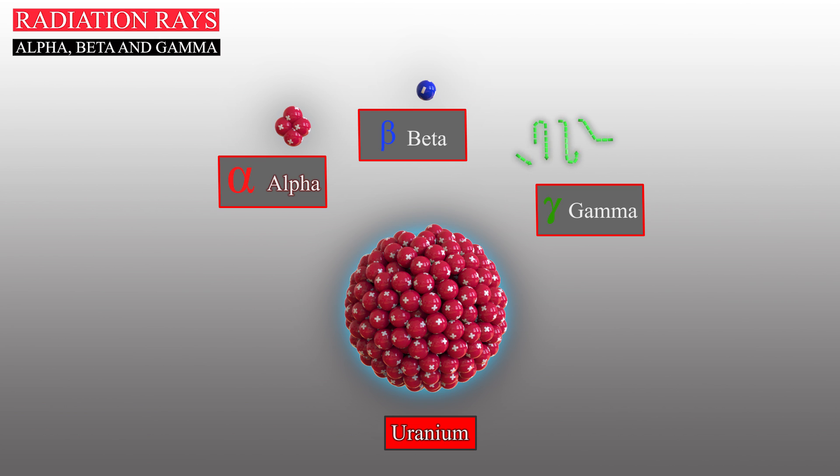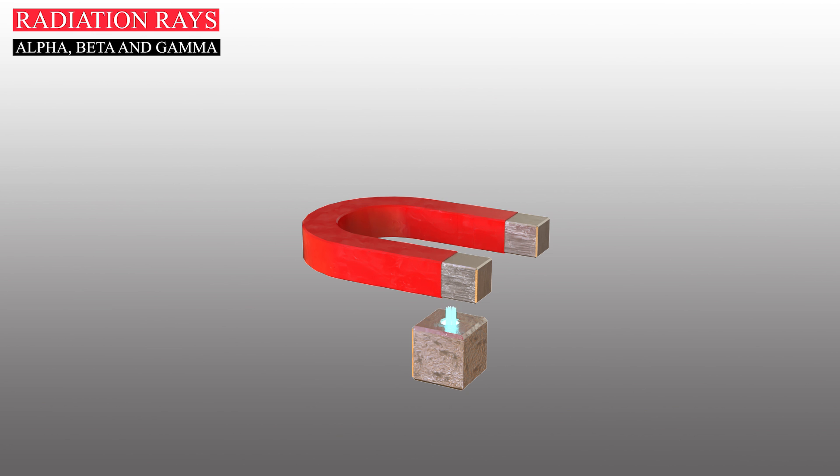Because of the different electrical charge properties of alpha, beta and gamma radiation rays, they can be separated by directing a beam from a radioactive source through a magnetic field.